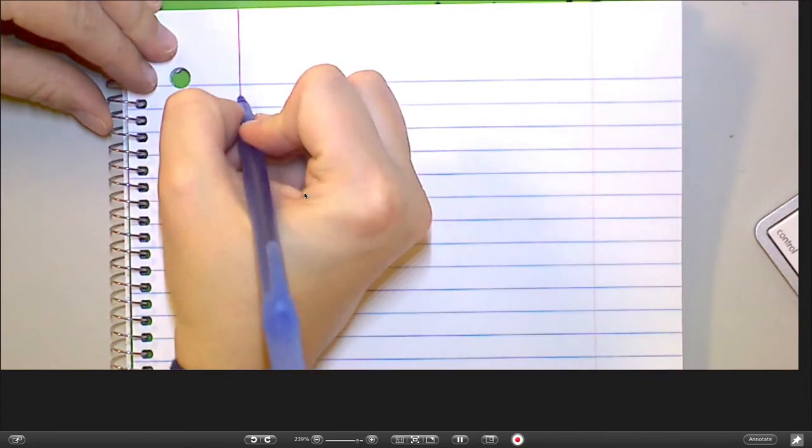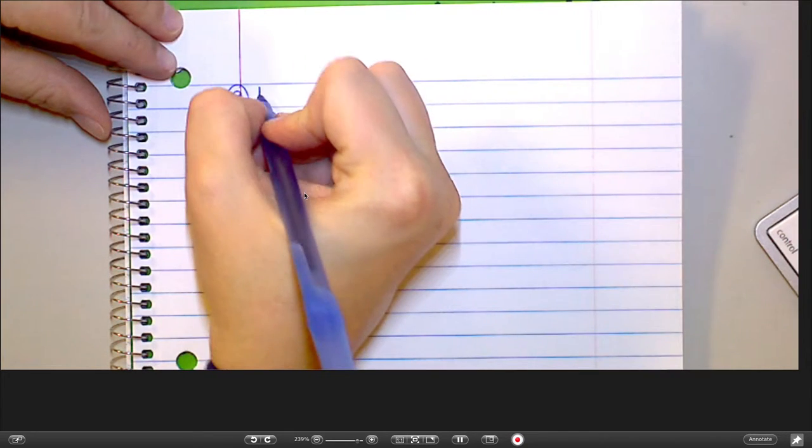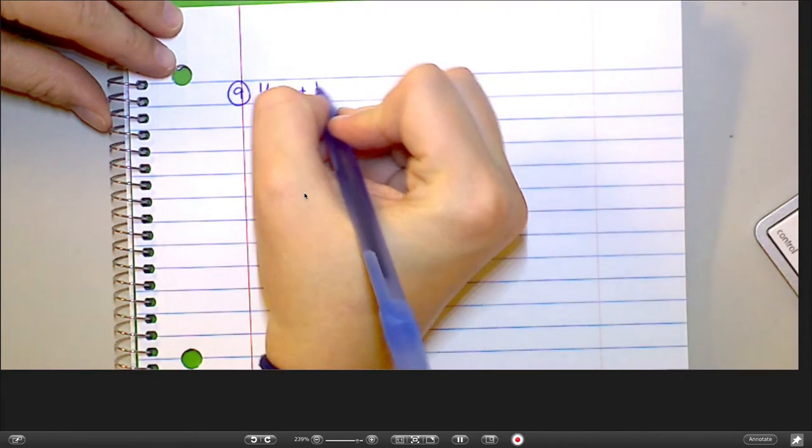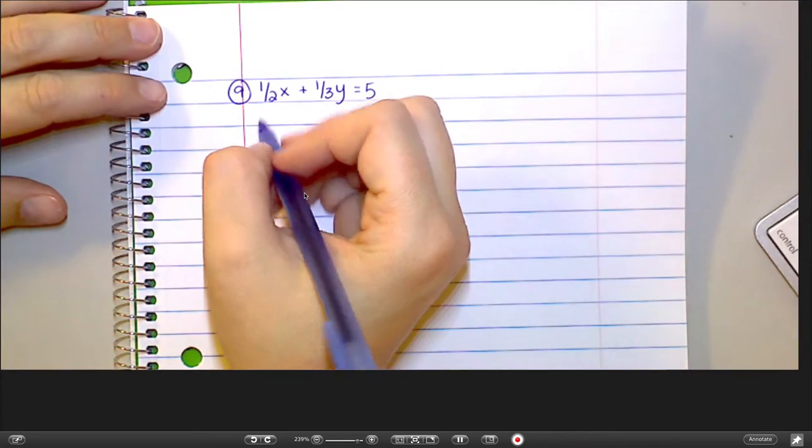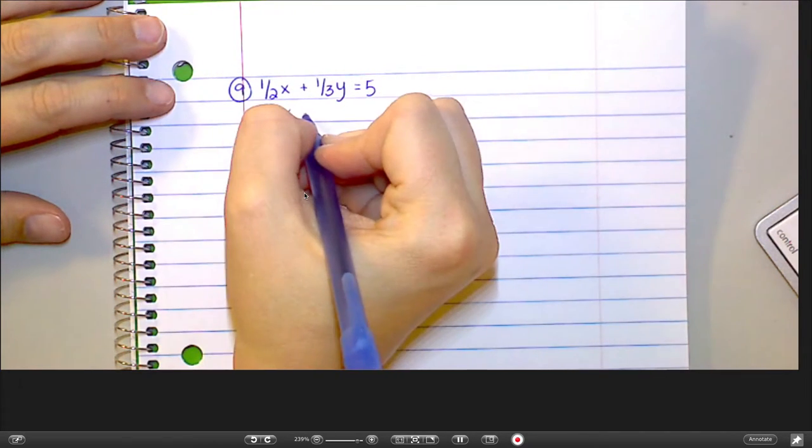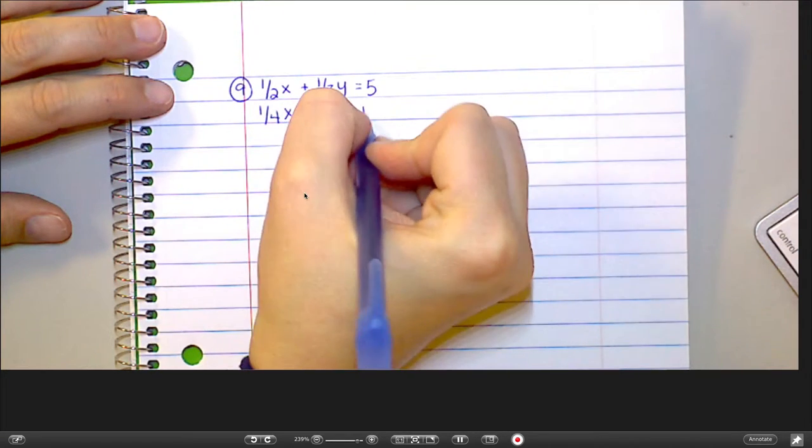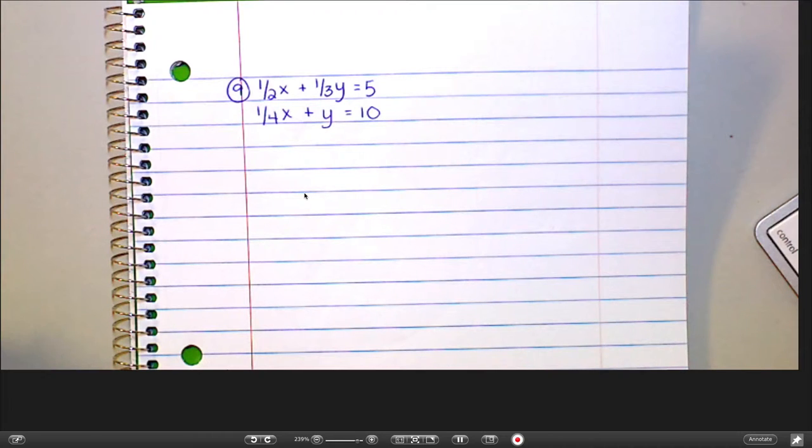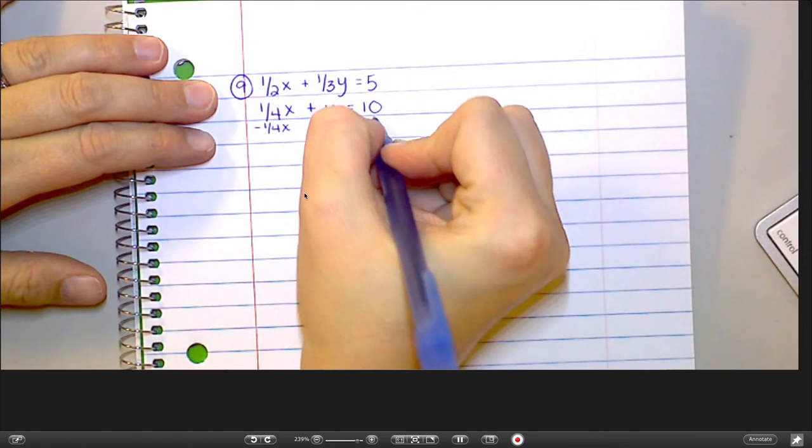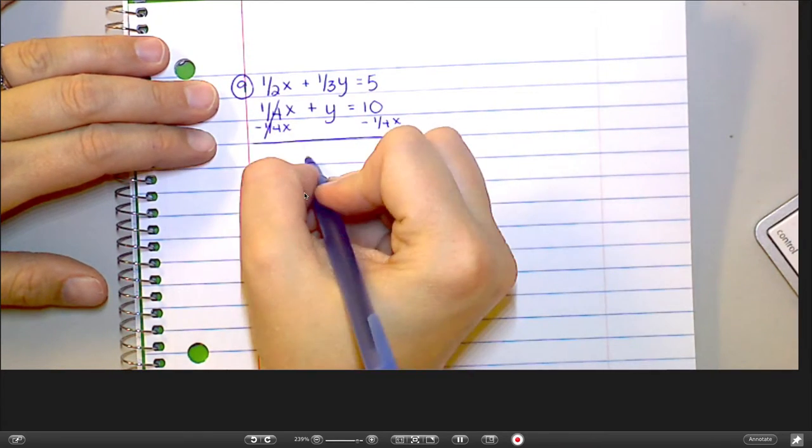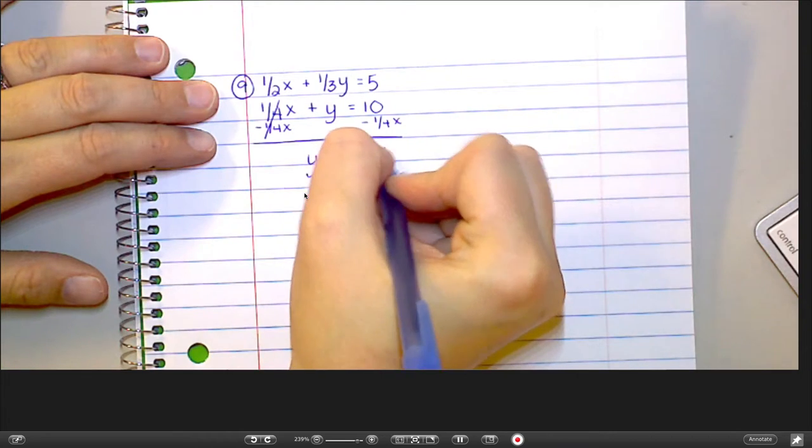One more you want to see? Number 9. I was expecting number 9. 1 half x plus 1 third y equals 5. What do you want to get by itself? Probably the y on the bottom. So I'm going to do that by subtracting 1 fourth x. So I end up with y equals negative 1 fourth x plus 10.